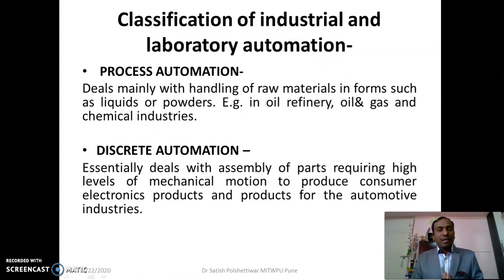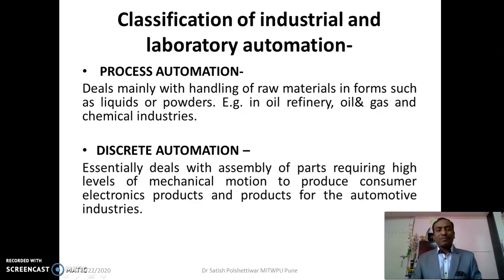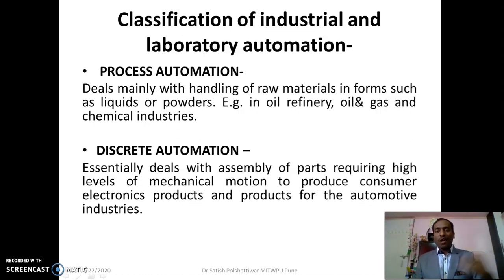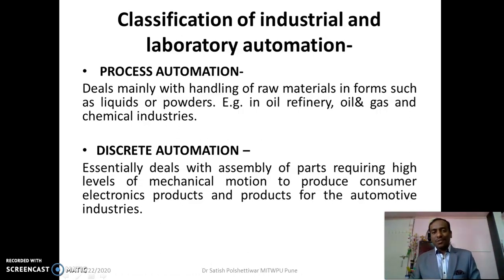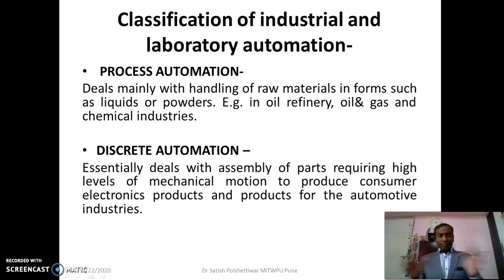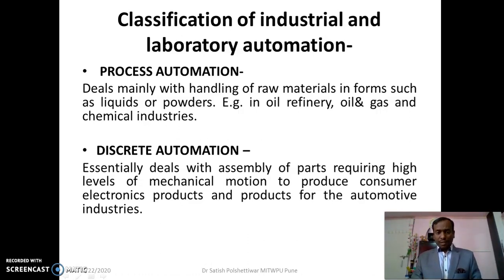Industrial and laboratory automation can be classified as process automation and discrete automation. Process automation deals with handling raw materials in the form of liquids or powders — for example, in oil refinery, gas refinery, and chemical industries where raw materials must be continuously supplied to fermenters or other systems. Discrete automation essentially deals with assembly operations requiring high levels of mechanical motion to produce consumer electronics or automotive industry products.